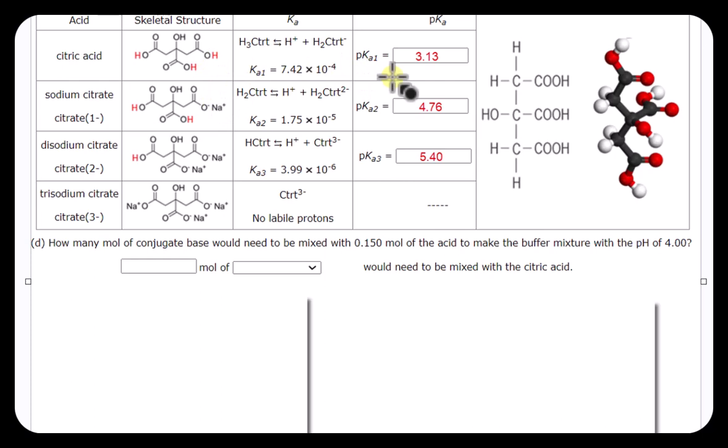Now, the pKa is, in effect, the pH that you're going to get if you have equal amounts of the acid and its conjugate base. Now, notice, we want a pH of 4. So we want to end up having it more basic than if you have equal amounts of both. In fact,